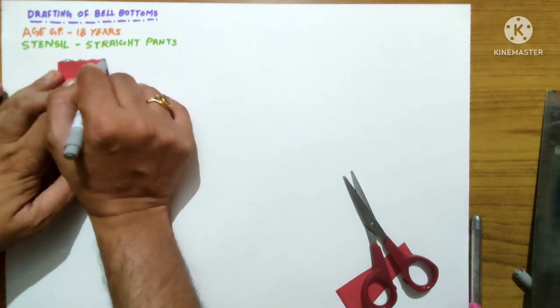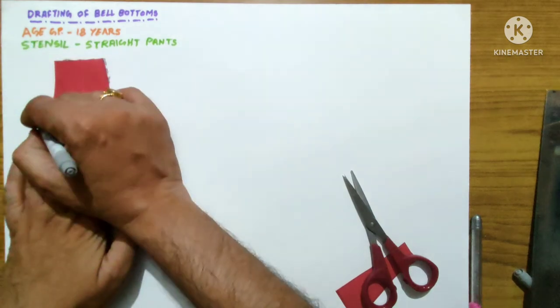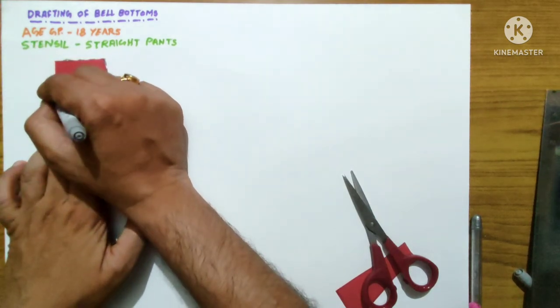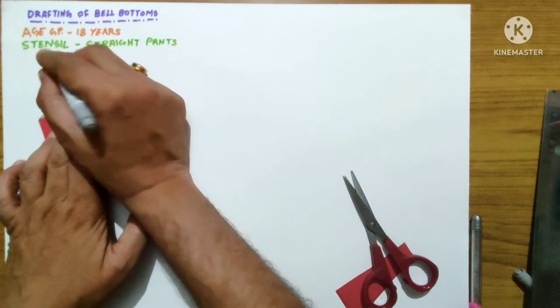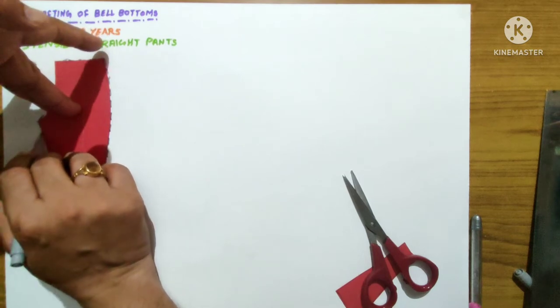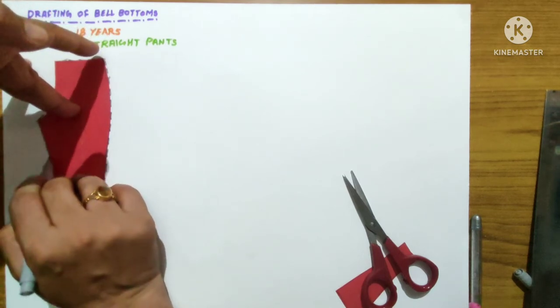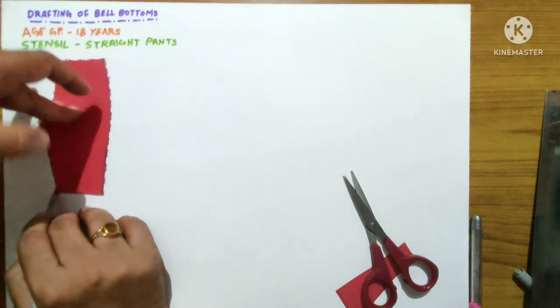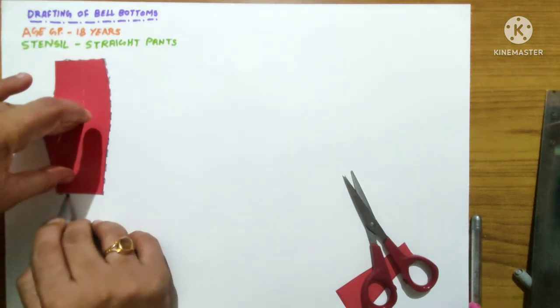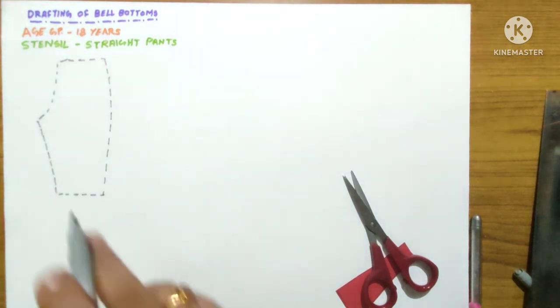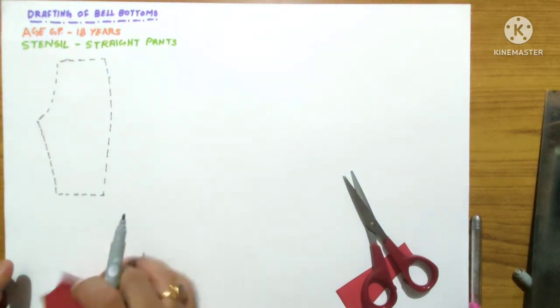In the previous videos we have started from the basic bodice block of kids and with the grace of God and your love this is the draft number 67, 68. I hope this was not possible without your support. So I am really thankful to you for your unconditional love and support given to Stylista Moda. And here we have done with the process of tracing upper portion.